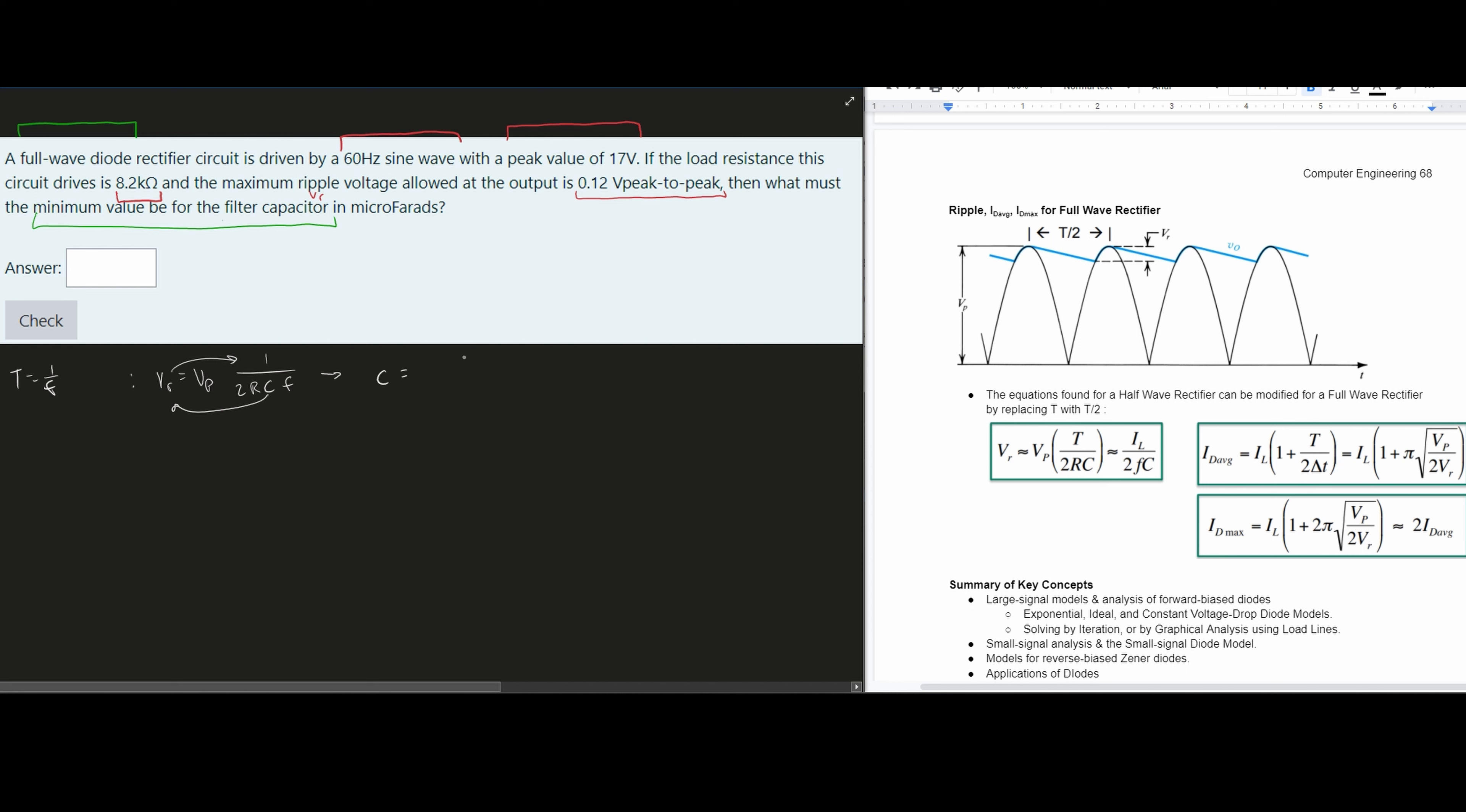Our capacitance is going to equal Vp divided by VR times 2Rf. Our frequency we can just replace with 60 because we have 60 hertz. We're going to combine like terms and plug in some other values. Our Vp, which is the peak value, the maximum that it can be, is going to be this 17 volts right here. That's going to go in here.